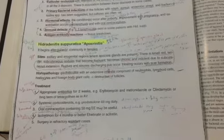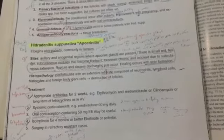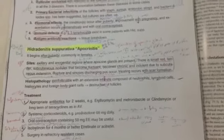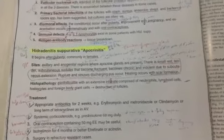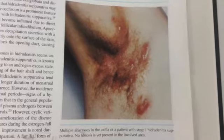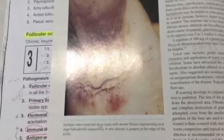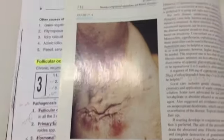This is the hidradenitis suppurativa, which begins at puberty, commonly in females, especially axillary and anogenital region, and it is small red tender subcutaneous nodules that become fluctuant, boils, then sinuses and scarring. This is a picture of the multiple abscess on the axilla with stage one hidradenitis suppurativa. No fibrosis yet. And we can see here more advanced case with multiple interconnected sinus tracts with severe fibrosis, as we can see here.